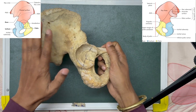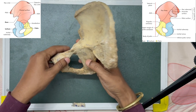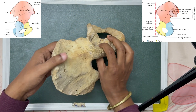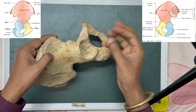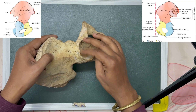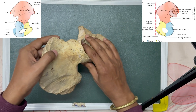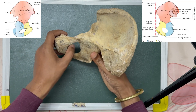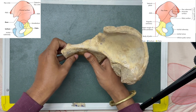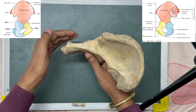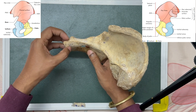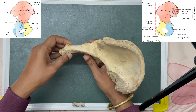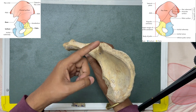To hold the hip bone in anatomical position, the acetabulum should always be facing laterally so that the femur comes and forms the hip joint here, which is a ball and socket variety of synovial joint. The expanded portion, the ilium, should always face above, and the obturator foramen should always face anteriorly. The pubis is always anteromedial to the obturator foramen, and the ischium is always posteroinferior to the obturator foramen.